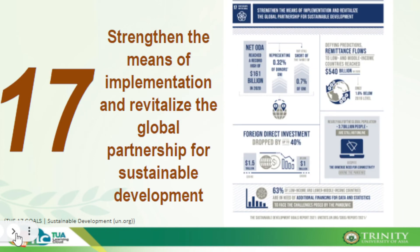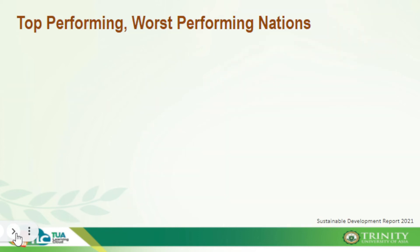SDG number sixteen is 'Peace, Justice and Strong Institutions' — promoting peaceful and inclusive societies for sustainable development, access to justice, and accountable institutions at all levels. SDG number seventeen is 'Partnerships for the Goals' — to strengthen the means of implementation and revitalize the global partnership for sustainable development. Now let's look at the top performing and worst performing nations in terms of their SDGs.